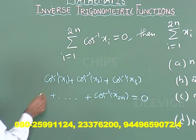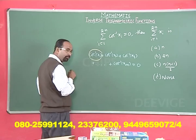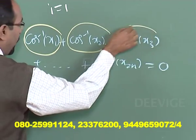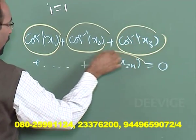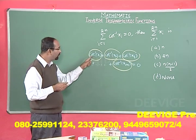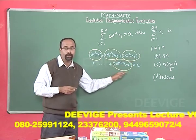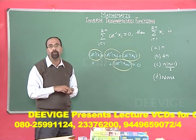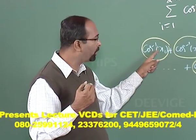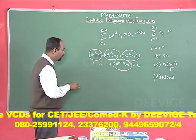So cos⁻¹(x₁) = 0, cos⁻¹(x₂) = 0, cos⁻¹(x₃) = 0, … cos⁻¹(x₂ₙ) = 0. That means x₁, x₂, x₃, … up to x₂ₙ must all be equal to 1, because cos⁻¹(1) = 0.